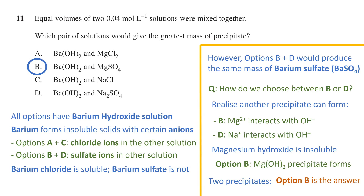We won't go through it here, but instead of looking at the barium ion combinations first, we could have considered the hydroxide ion combinations first and eliminated options based on hydroxide solubilities before moving to the barium ion combinations. Either way, we would have found that option B was the answer.